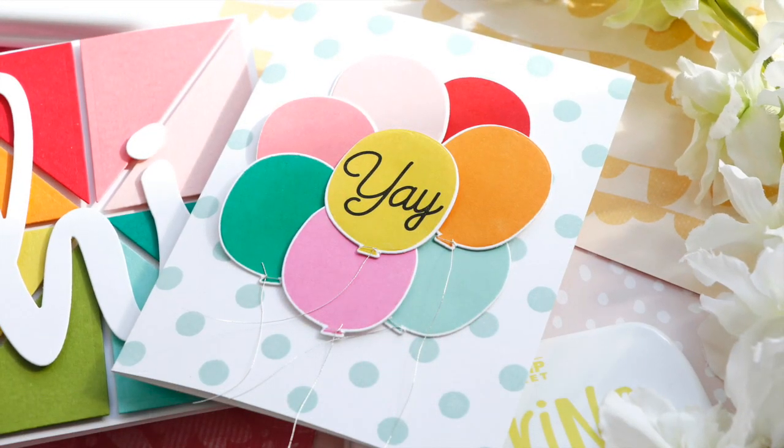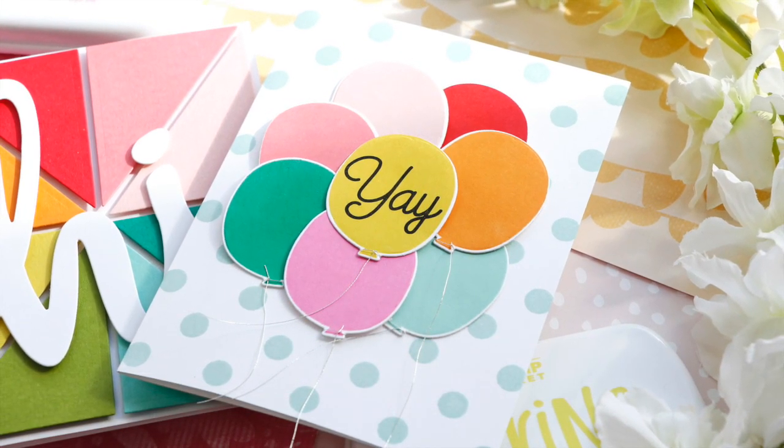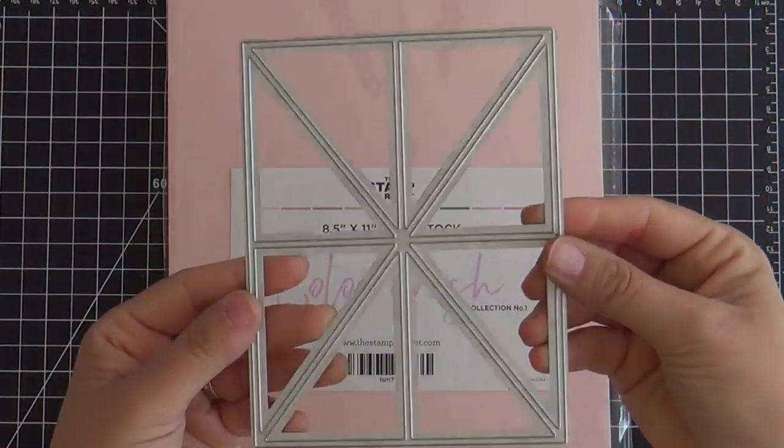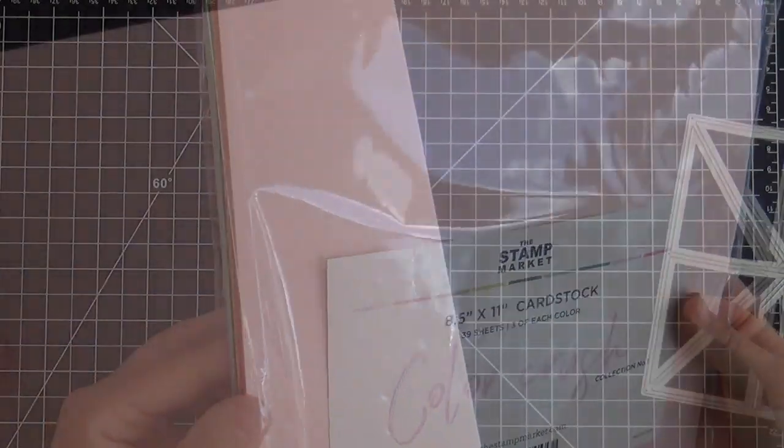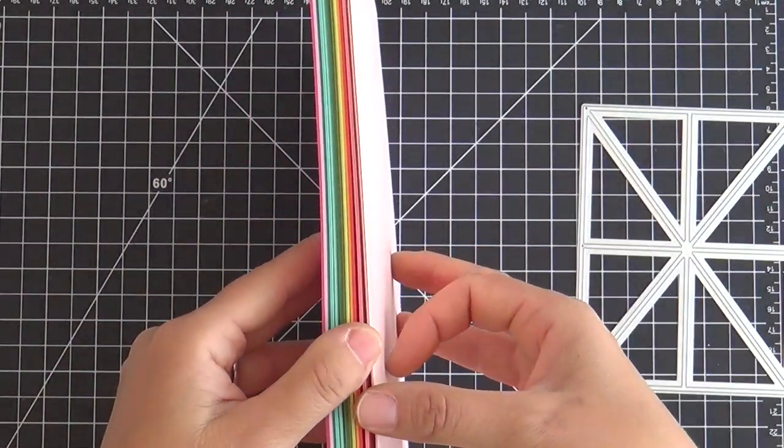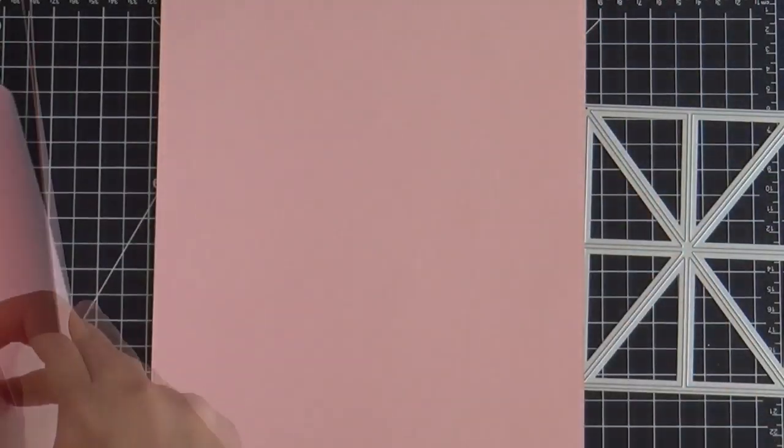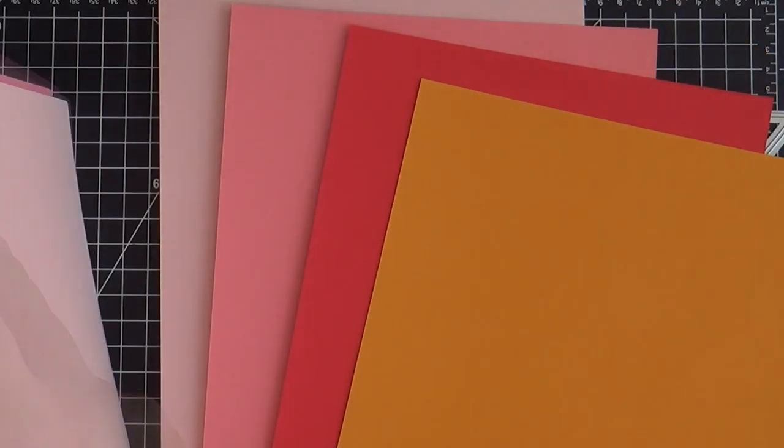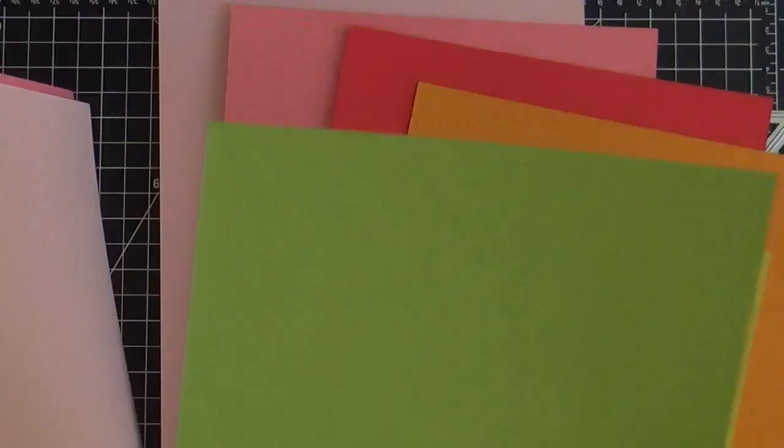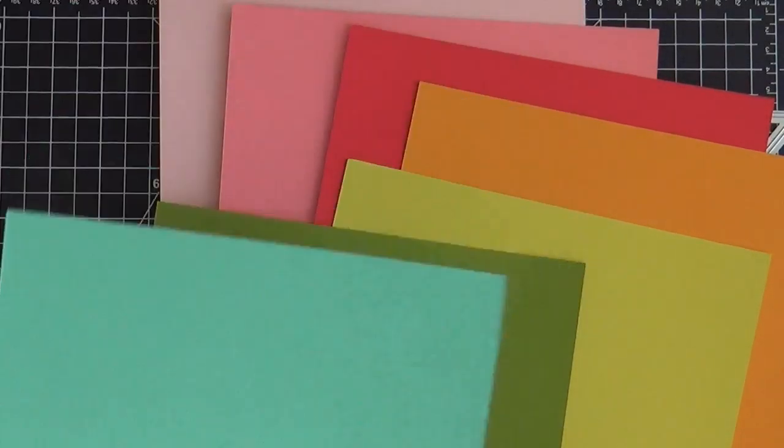So there's card number one which showcases the delicious inks. Now for this one I'm using this color block die. I'm going to die cut some of these new cardstocks. So like I say, the cardstocks were dyed to match the inks. So if you love the colors of the inks you're going to love the colors of the cardstocks and I do.